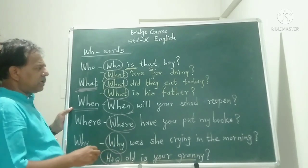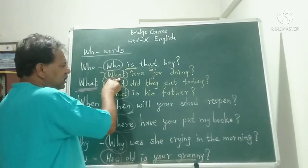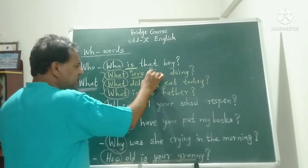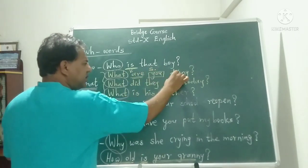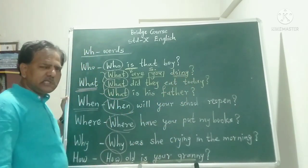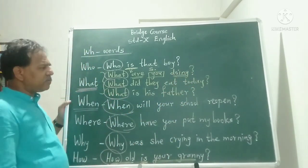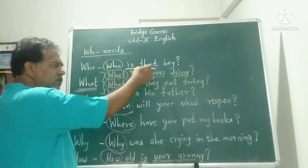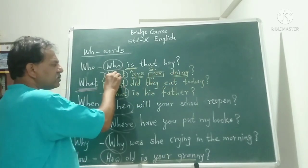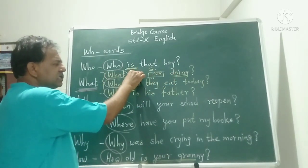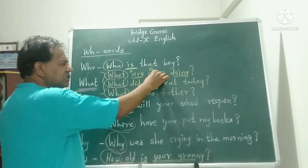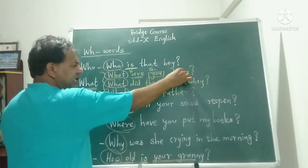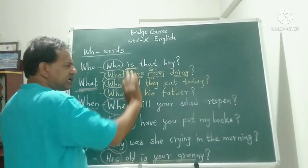For the remaining sentences, look at 'What are you doing?' — WH word WHAT, then helping word, then subject, then main word plus ING form — present participle form — because it is a present progressive sentence. So the structure is: WH word + helping word + subject + main word + ING form (present participle form).